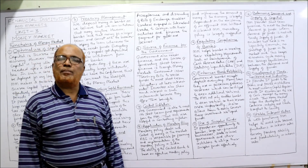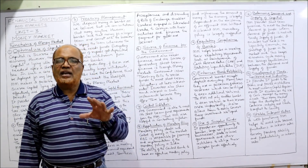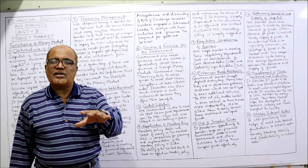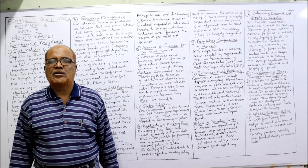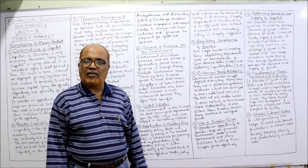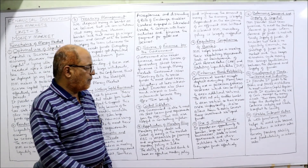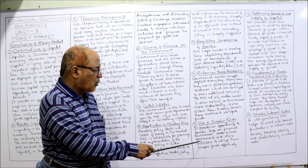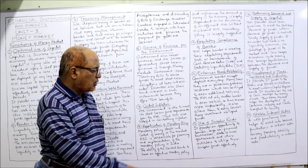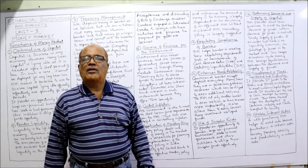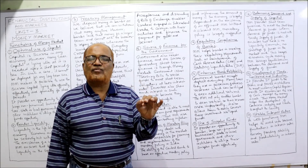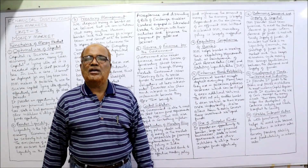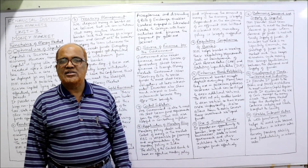The eleventh function is the use of surplus funds. If any organization has surplus funds, those can be better utilized in the money market to get a reasonable return. Money should not remain idle. The money market provides an opportunity to banks, large non-financial businesses, state and local governments, and other institutions to utilize their surplus funds effectively — the most important benefit being better utilization of scarce resources.